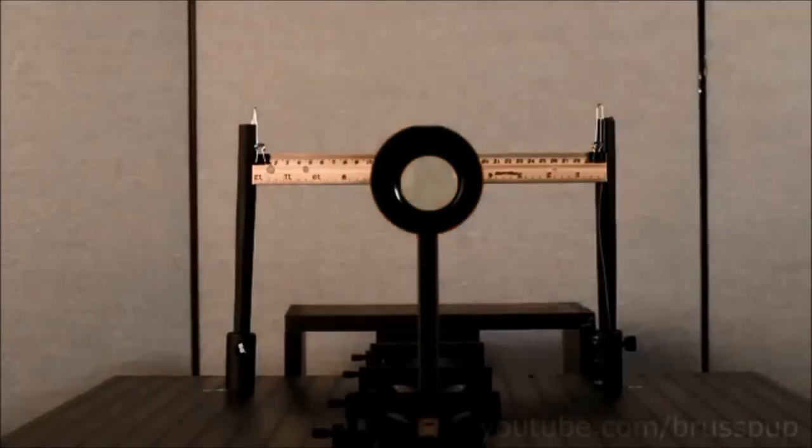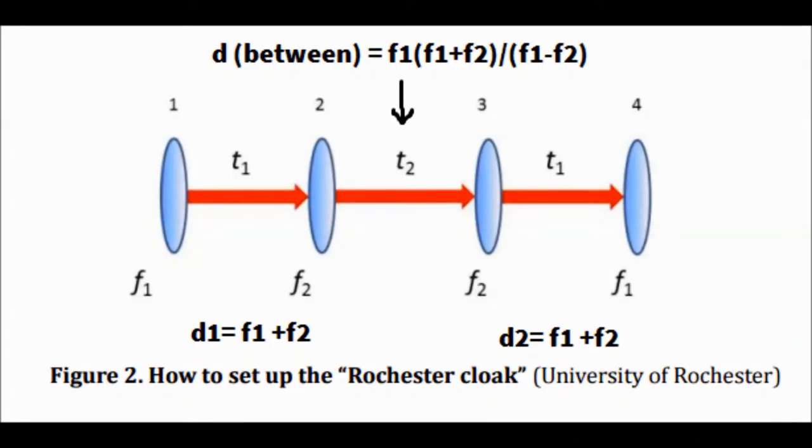The Rochester cloak depends on the basic properties of converging lenses and requires four lenses to work properly. According to the Rochester University's website, you can build your own Rochester cloaking device by setting up the lenses as shown. Identical lenses are placed on the outside and another pair of identical lenses are placed on the inside. The lenses on the outside are separated by the sums of their focal lengths and the inside lenses are separated by a distance of the second focal length times the sum of the two focal lengths, all divided by the first focal length minus the second focal length.